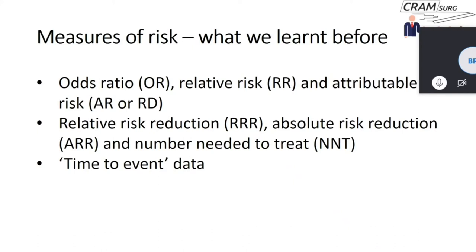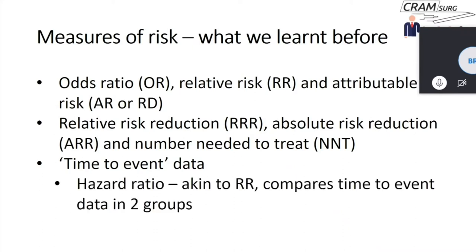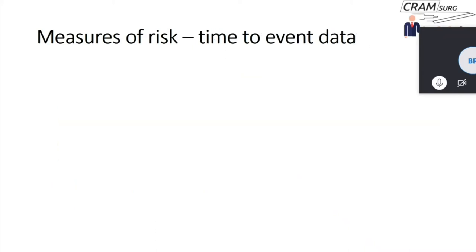When we talk about time-to-event data, we mean not just whether the event happens — we're interested in not only whether a specific event occurs, such as death, wound infection, or recurrence of a hernia, but also when that event happens. Does it happen early on during the course of follow-up or does it take many years? Hazard ratio is a risk measure used for time-to-event data; it's very similar conceptually to relative risk and compares time-to-event data in two groups.